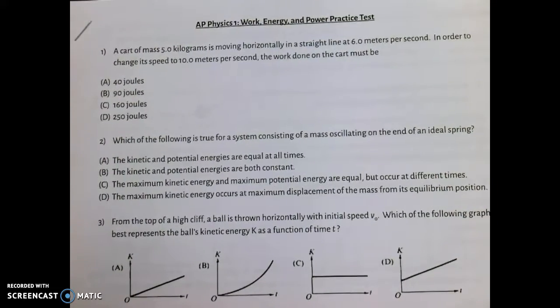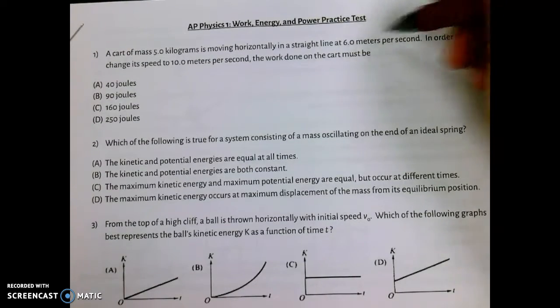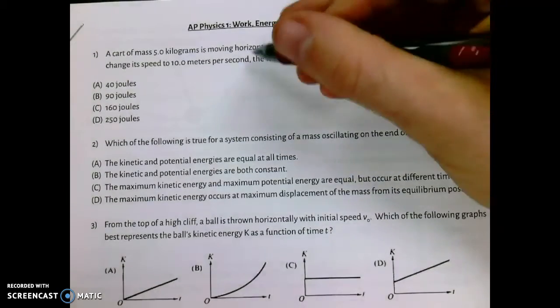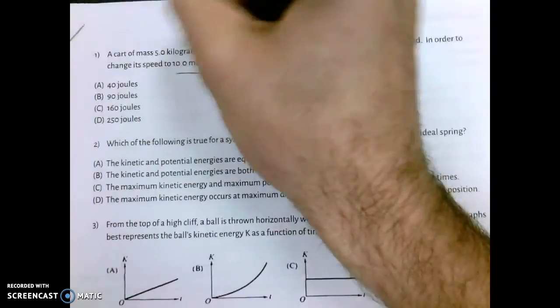Okay, a cart of mass 5 kilograms is moving horizontally in a straight line at 6 meters per second. In order to change its speed to 10 meters per second, the work done on the cart must be...